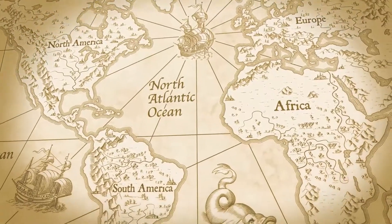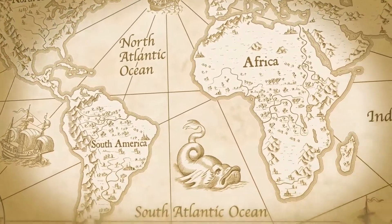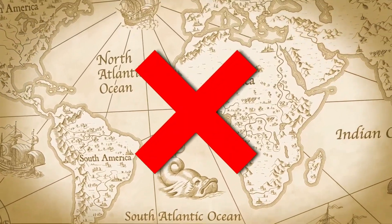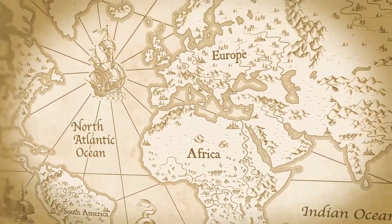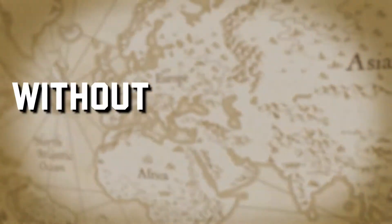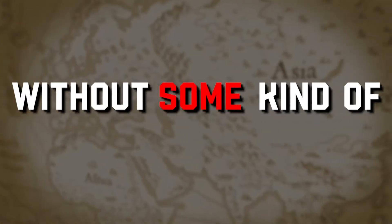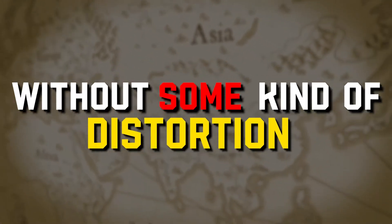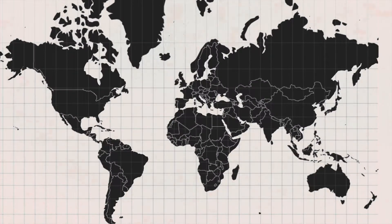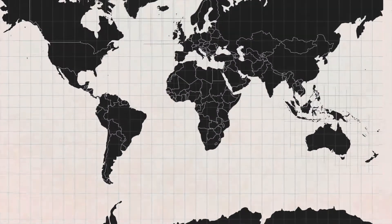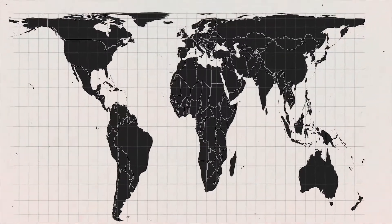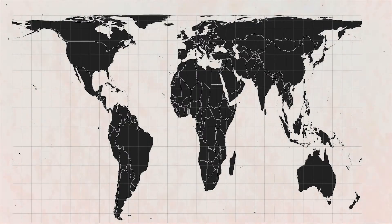The world is a sphere, maps are flat, so they can't accurately represent the spherical earth on a two-dimensional surface without some kind of distortion. Different map projections show different parts of the earth as larger or smaller than others, and distort shapes in other ways too.